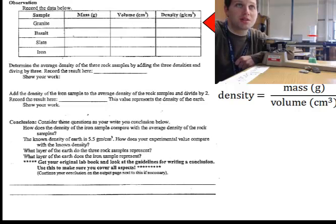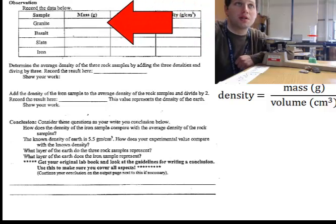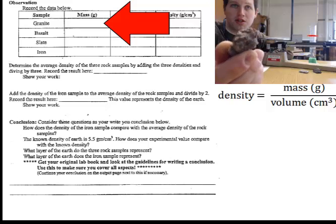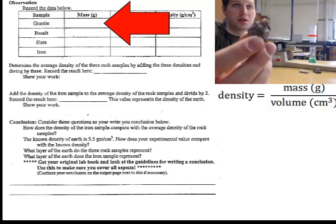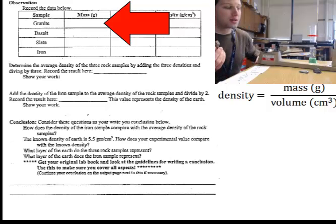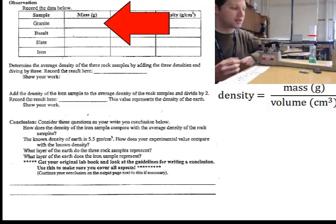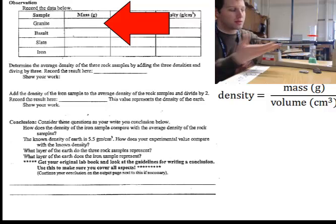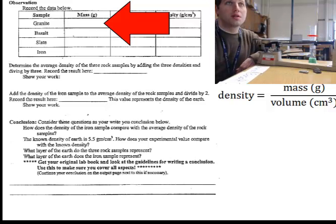In your lab today, we'll be calculating the density of these rocks and one metal, and you'll be using this lab data table. First, your job is to find the mass — we'll start with granite. Here's an example of a reddish granite rock. The first thing you'll do is use a triple beam balance to find the mass. This is a review; you've done this before.